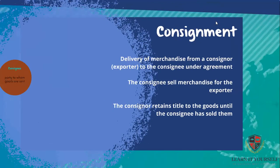Consignment is the delivery of merchandise from an exporter — known as the consigner — to an agent known as the consignee. Under this agreement the agent sells the merchandise for the account of the exporter. The consigner retains title to the goods until the consignee has sold them, and the consignee sells the goods for a commission and remits the net proceeds to the consigner.